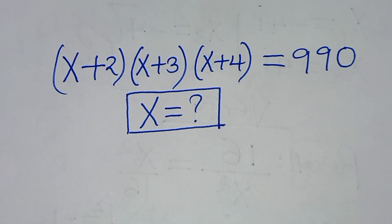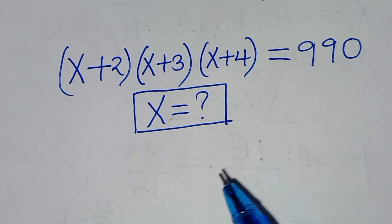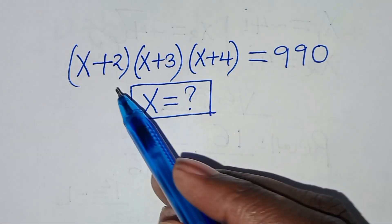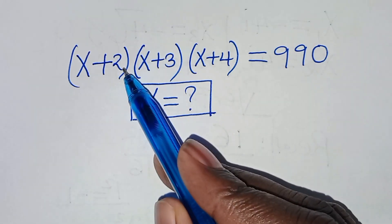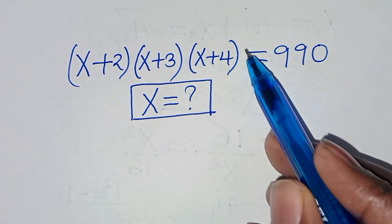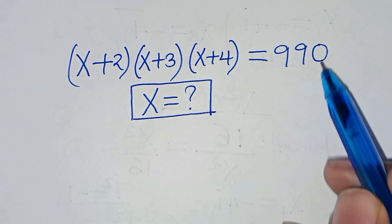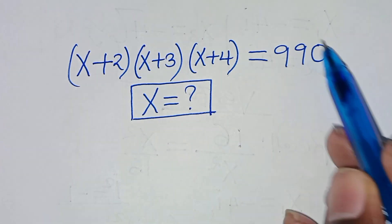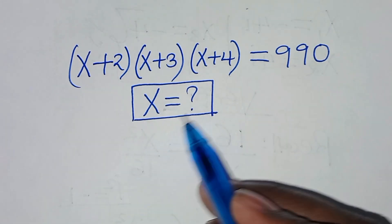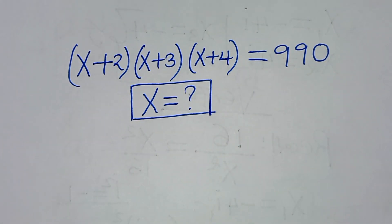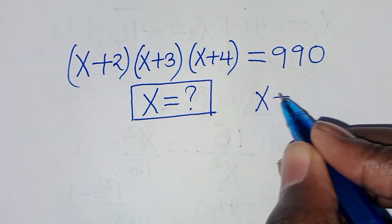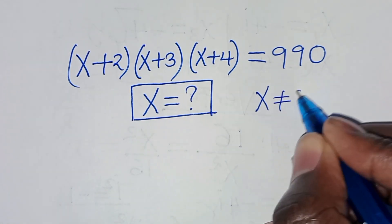Hello everyone, you are welcome to solve this nice algebra problem, which is (x + 2)(x + 3)(x + 4) = 990. What are the values of x, given that x is not equal to 0?